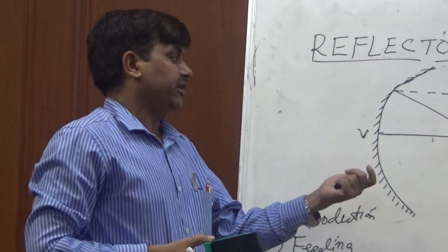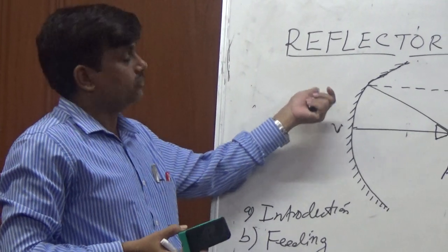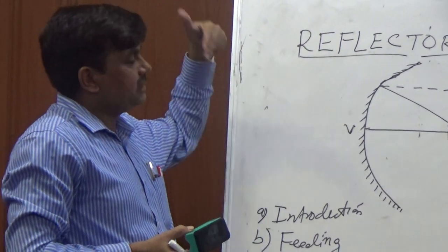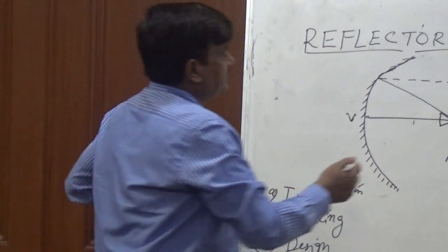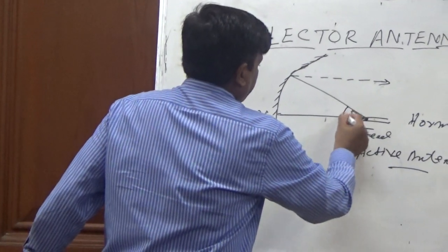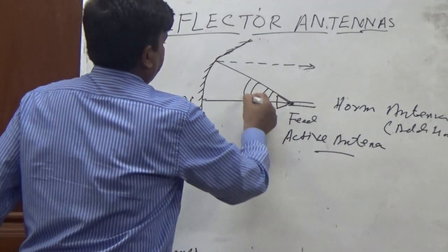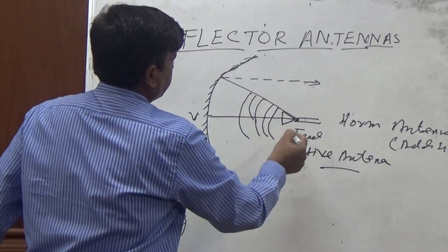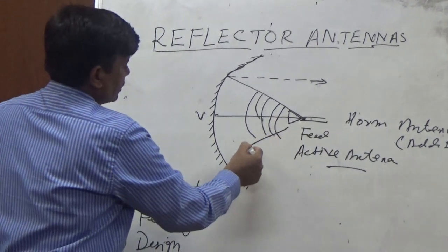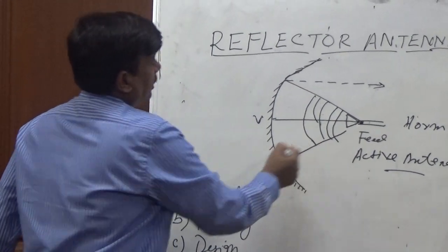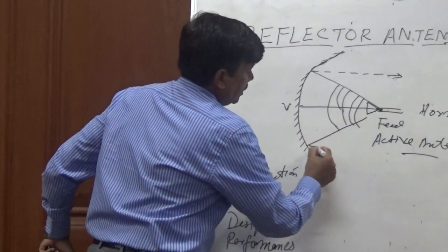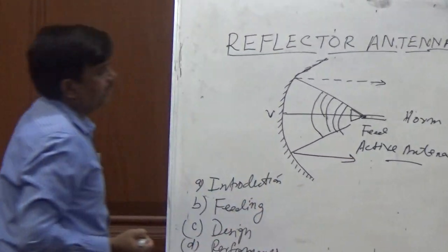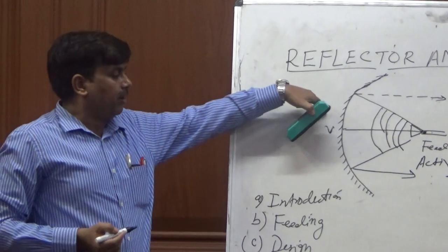And if it is radiated to particular direction, so after reflection also as a result we will get further improvement in the directivity. And if this horn antenna generally radiates spherical waves, so spherical waves are coming from this feed antenna and striking on the inner surface of this reflector and after reflection,